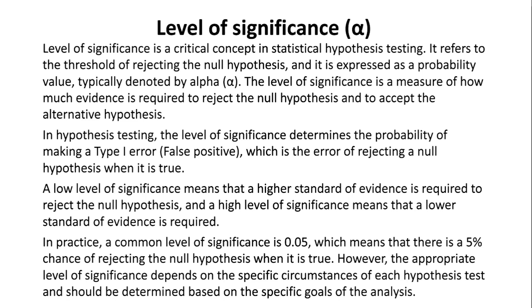In hypothesis testing, the level of significance determines the probability of making a type one error — a false positive — which is the error of rejecting a null hypothesis when it is true. A low level of significance means that a higher standard of evidence is required to reject the null hypothesis.